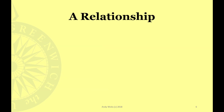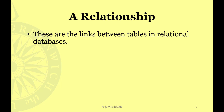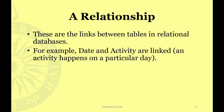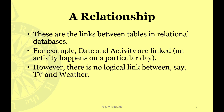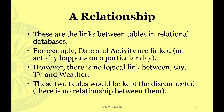A relationship refers to the links between tables in a relational database — that's the 'relational' bit. For example, date and activity are linked because an activity happens on a particular day. However, there's no logical link between, say, TV and weather, so these two tables would be kept disconnected because there's no relationship between them.